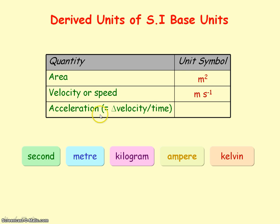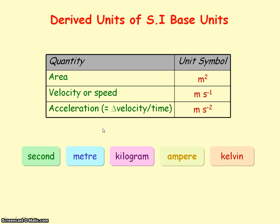Acceleration equals a change in velocity divided by the time taken — the delta sign here represents a change. Velocity has units of meters per second, and time has units of seconds. So meters per second divided by seconds gives the units of acceleration as meters per second squared, which we represent as s to the minus two.